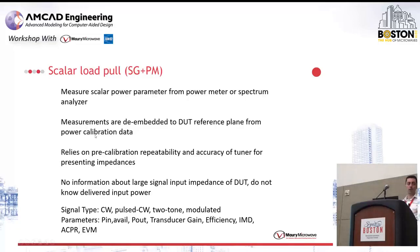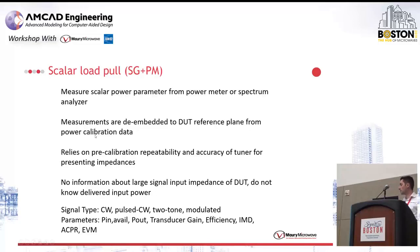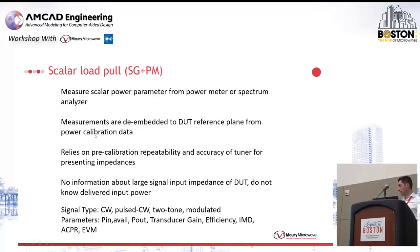Another important aspect, especially related to modeling, is that there's no information whatsoever about the large signal input impedance of the DUT. You know what your source power is and you can match with your source tuner, but you don't know the input gamma of your DUT, so you don't know the delivered input power to the device. This type of load pull can be done with CW, pulsed CW, two-tone, or modulated signals. Depending on the instrument used, you can measure available input power, output power, transducer gain, efficiency, and — with a spectrum analyzer — ACPR or EVM measurements.